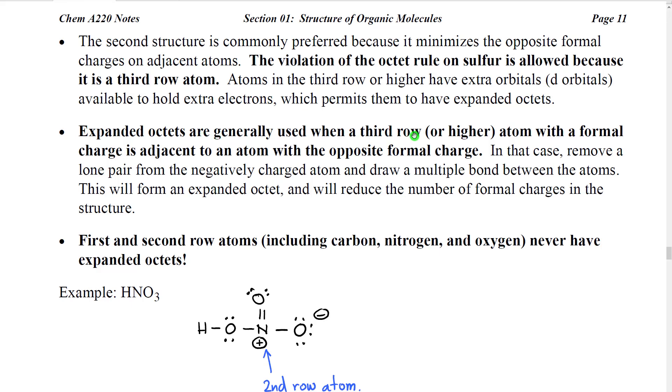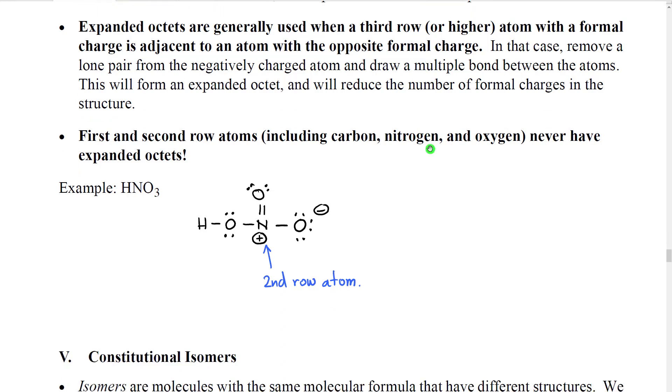So we generally use expanded octets when we have a third row atom with a formal charge that's adjacent to an atom with the opposite formal charge. In that case, then we can move lone pairs to between those two atoms and form an expanded octet. And it reduces the formal charges on each side of that bond. However, we cannot have expanded octets on second row atoms or first row atoms.